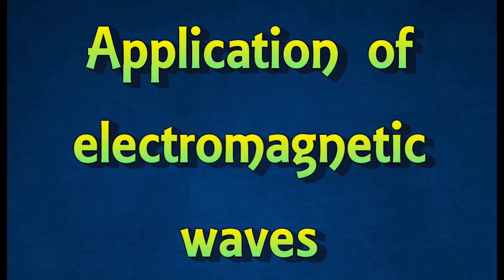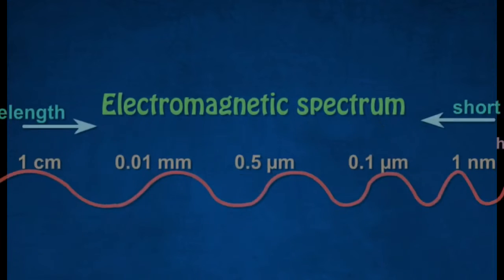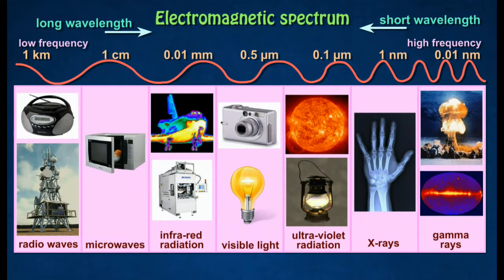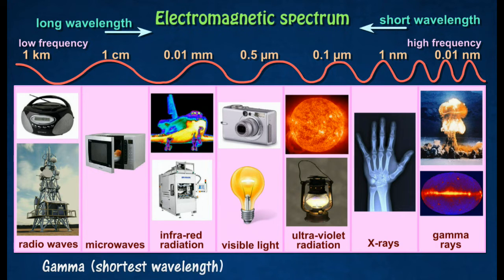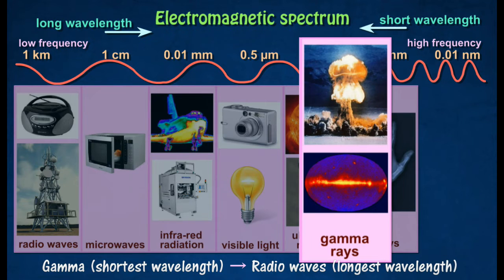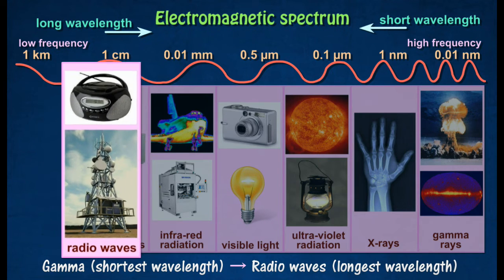Application of Electromagnetic Waves. The full range of electromagnetic waves, arranged orderly in their wavelengths and frequencies, is called the electromagnetic spectrum. The electromagnetic spectrum is the full range of electromagnetic waves, ranging from gamma rays, which have the shortest wavelength, to radio waves with the longest wavelength.